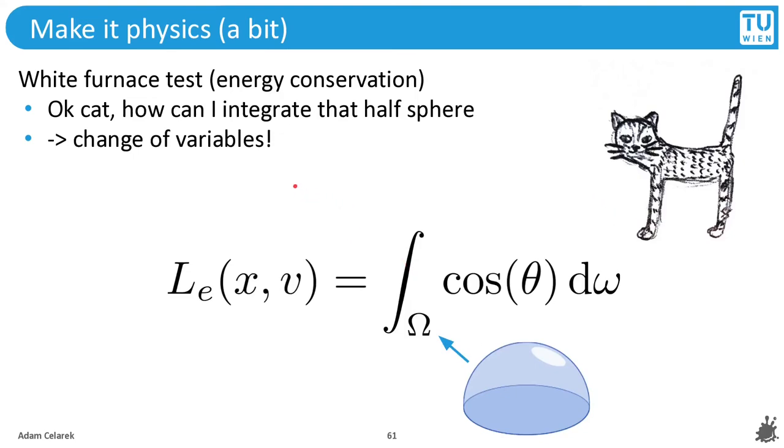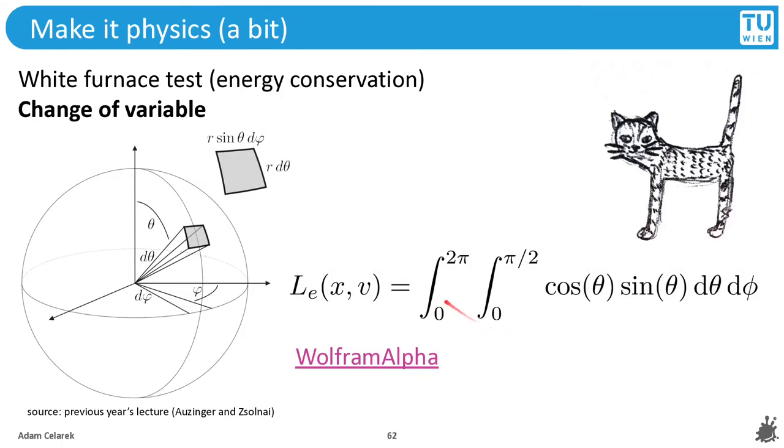Okay cat, how can I integrate that half sphere? Well, if you have a problem with integration, you can throw change of variables at it. Let's do that. I will not go into details of how this works. You can look it up on the internet somewhere. It is basically the change of variables that is needed to integrate over a full sphere, and then we divide by 2 so we have the half sphere.